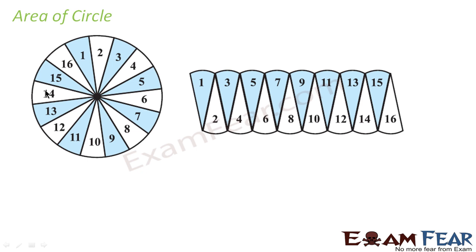Now let us understand the area of the circle. To find the area of the circle, what we have done is divide this circle into 16 equal parts — alternating blue and white sections. We then arrange them in this fashion: 1, 2, 3, 4, 5, 6, 7, 8. The 16 parts are arranged in this pattern.